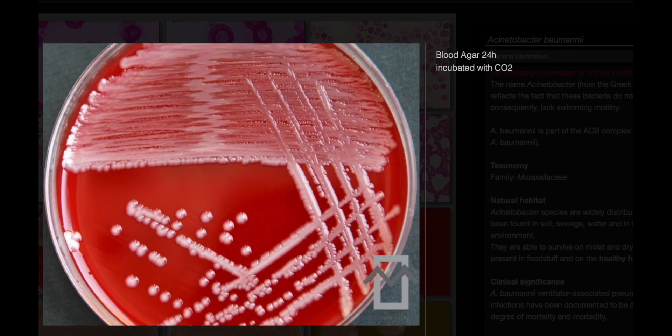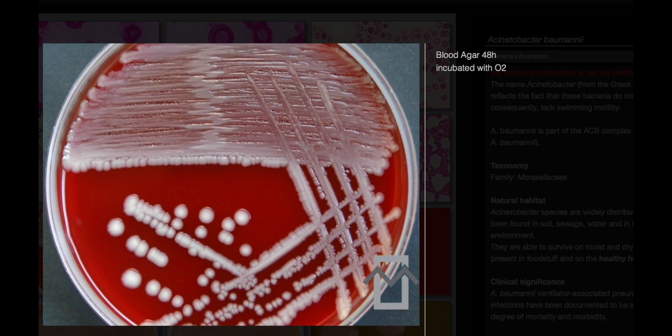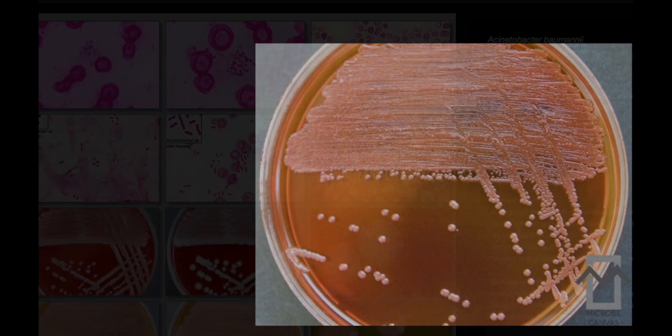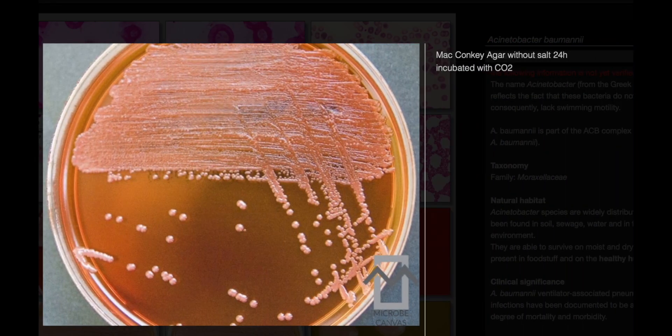Culture characteristics. Acinetobacter baumannii are obligate aerobes and non-lactose fermenters. On blood agar, after 24 hours of incubation, colonies typically appear as colorless to beige, domed, and smooth to mucoid with a thicker center growth. These colonies are generally smaller than those of Enterobacteriaceae and measure around 1-2 millimeters in diameter.